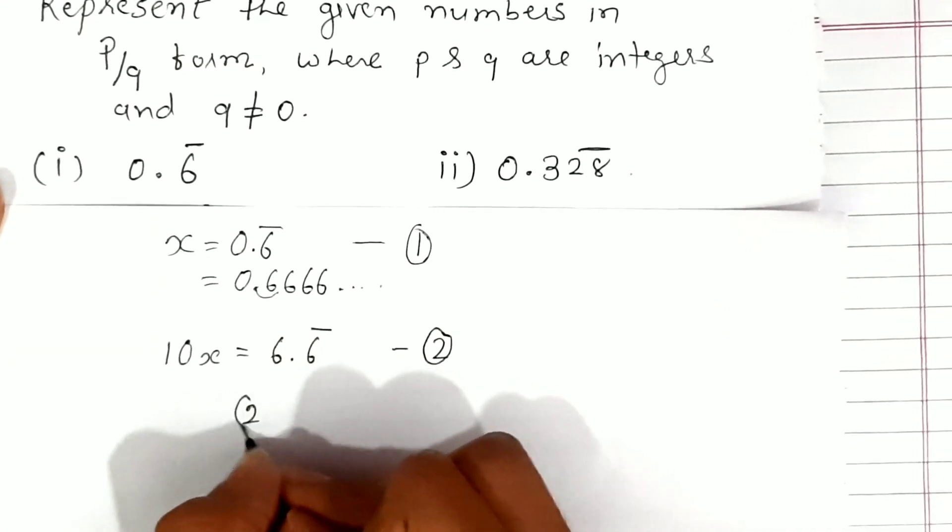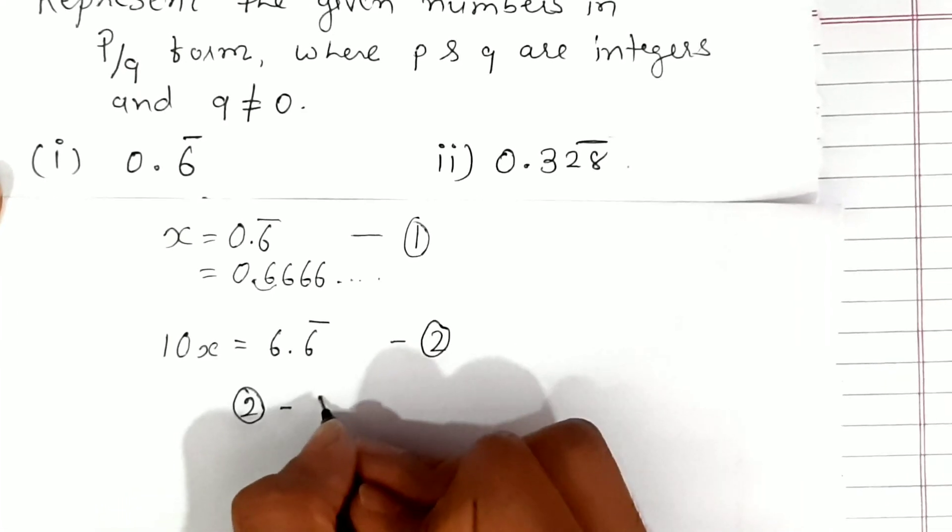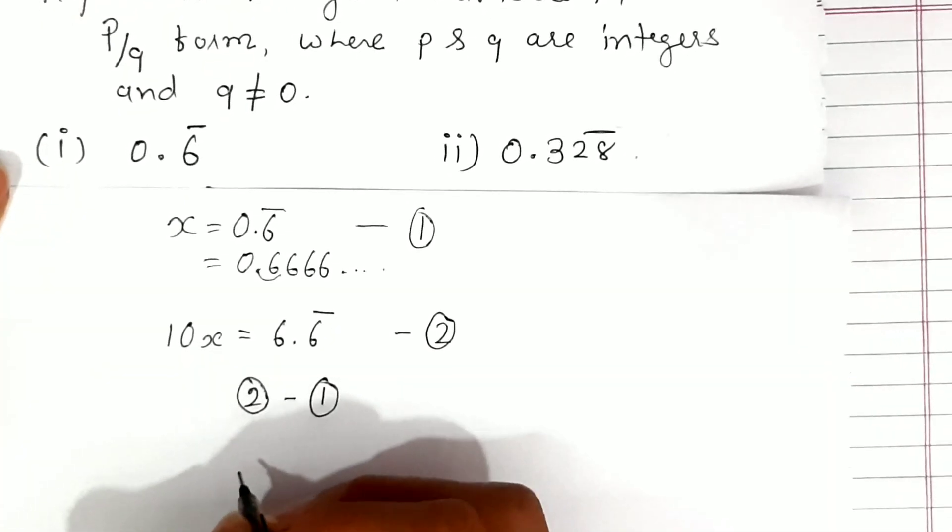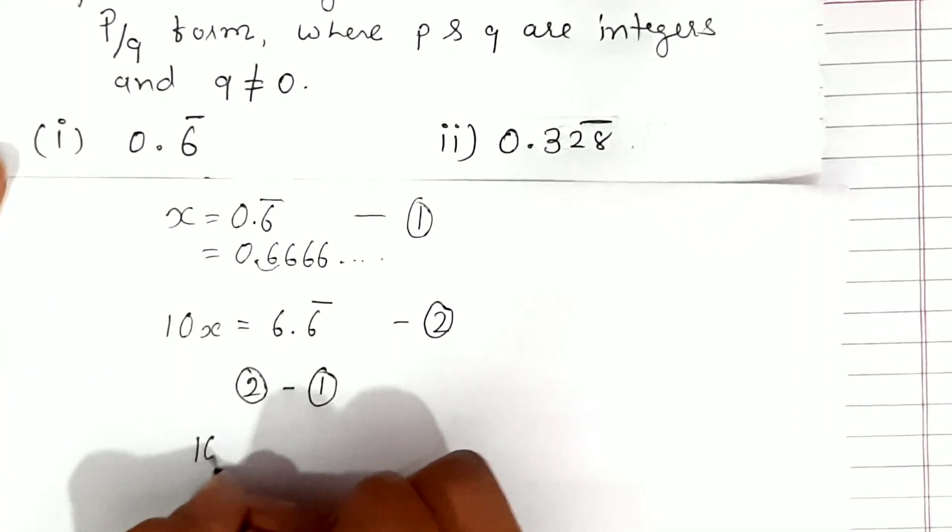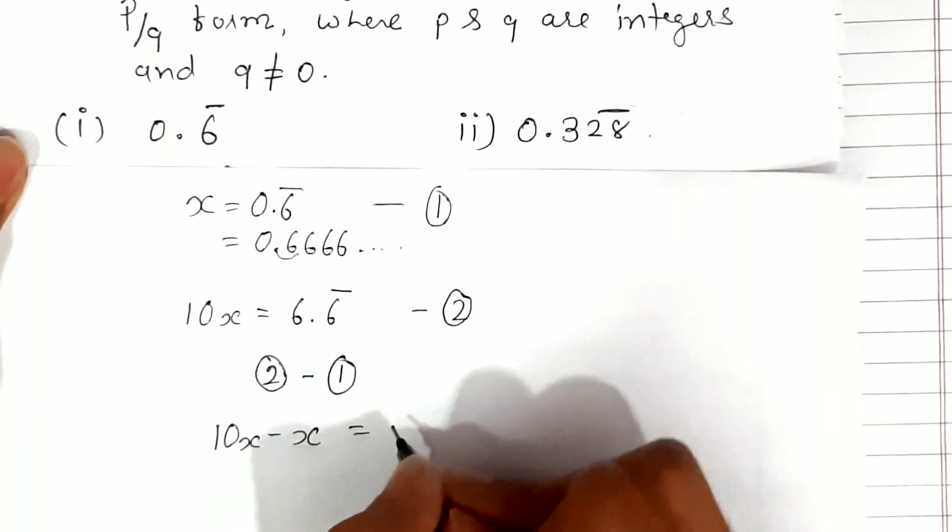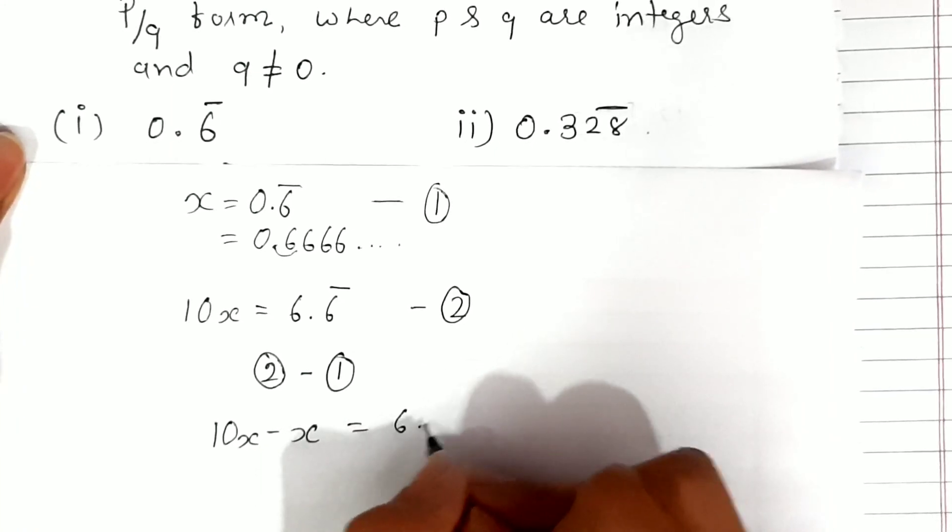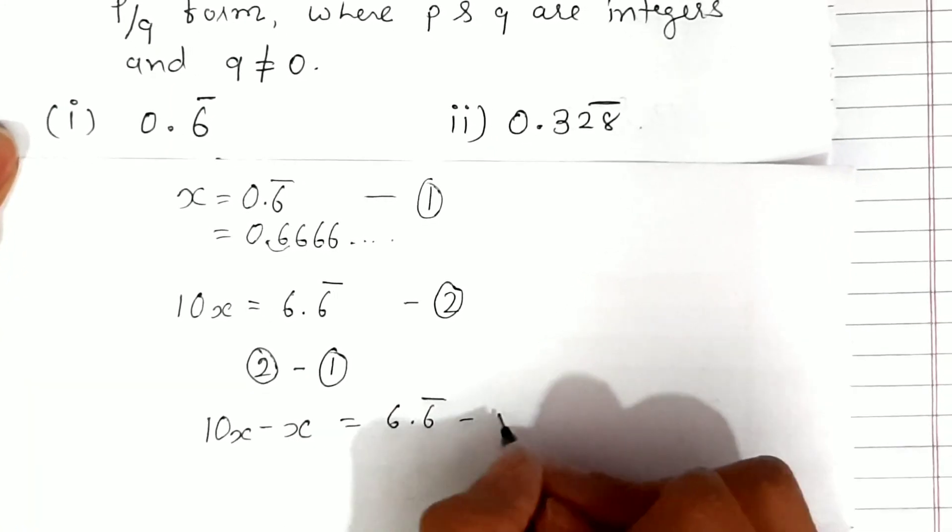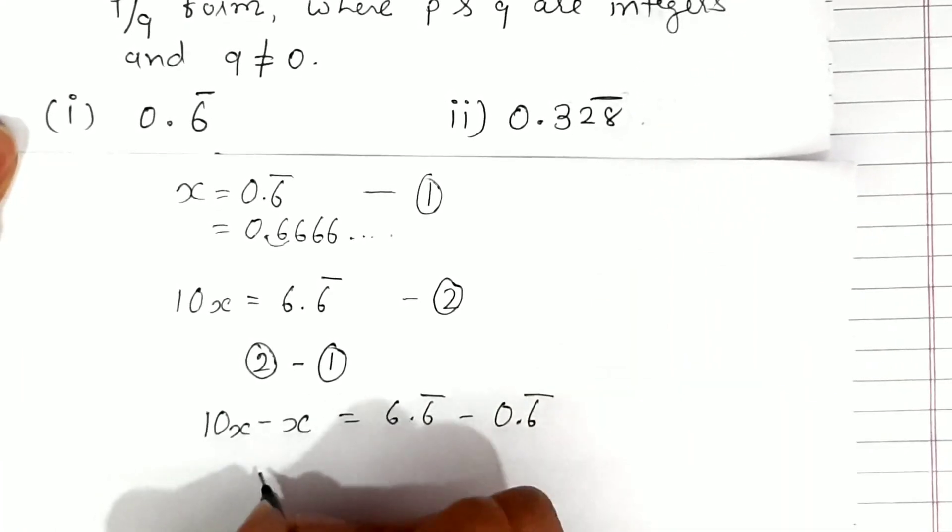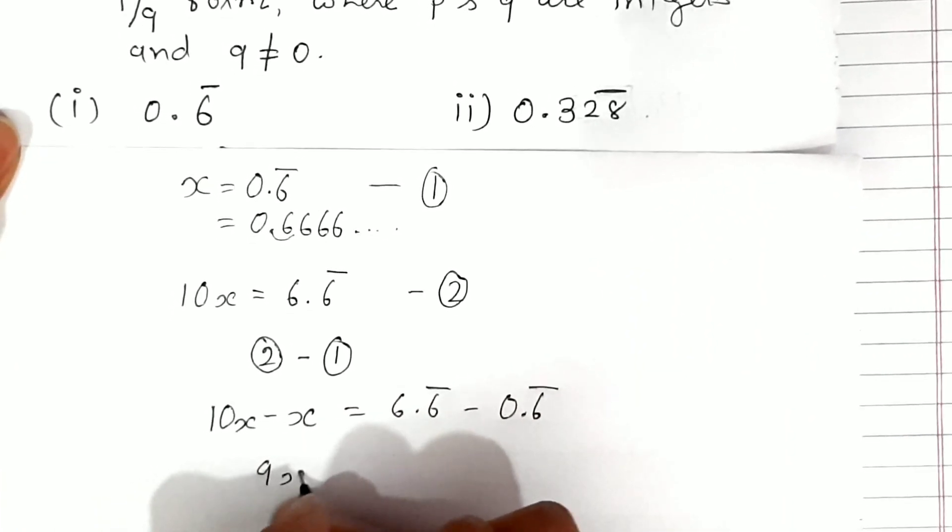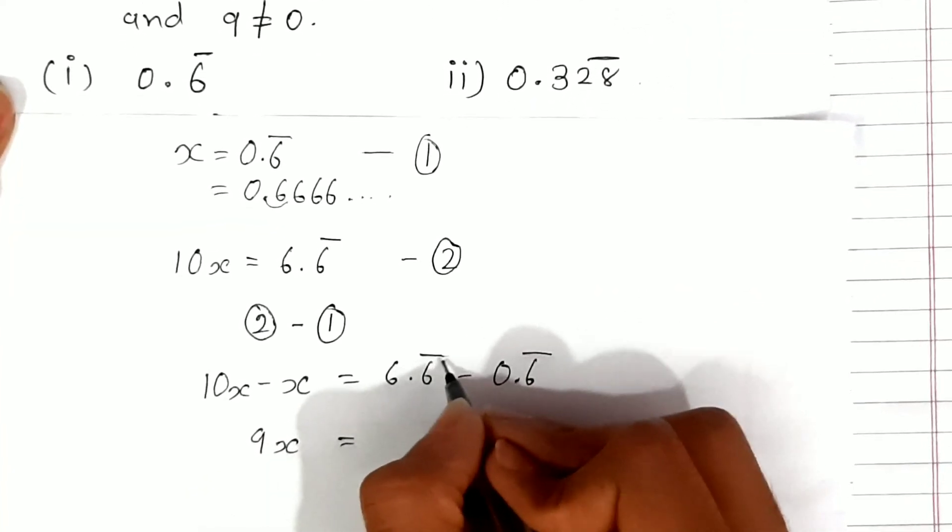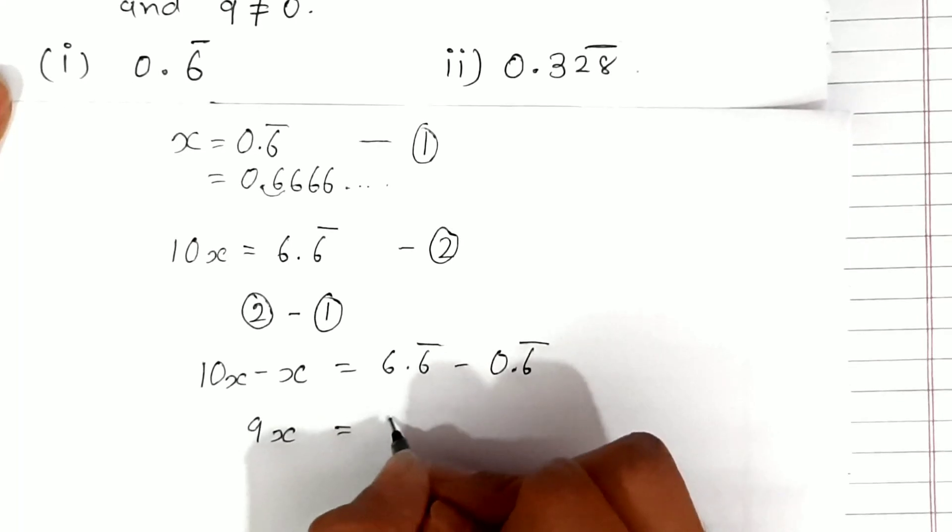Now we'll subtract equation 1 from equation 2. Subtracting, we get 10x - x = 6.6̄ - 0.6̄, which gives us 9x = 6, because the 0.6̄ parts cancel out.